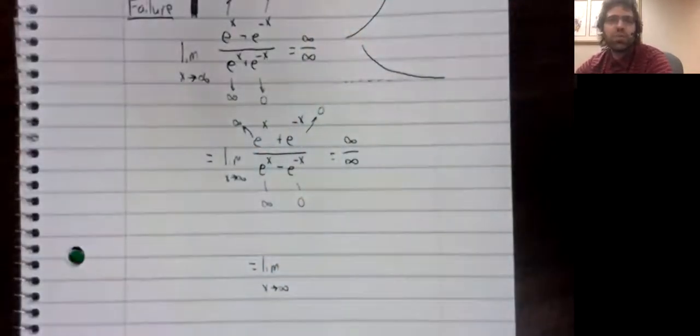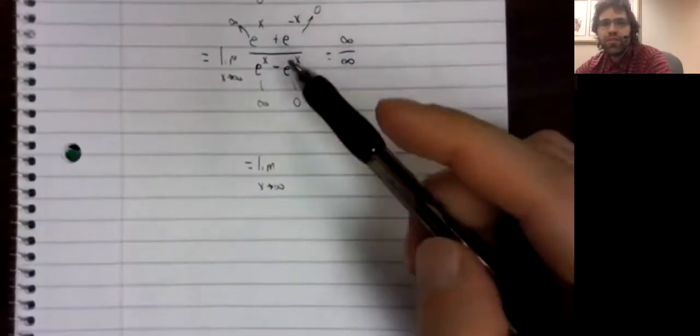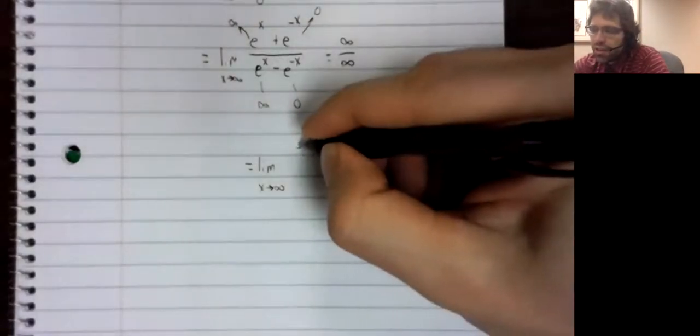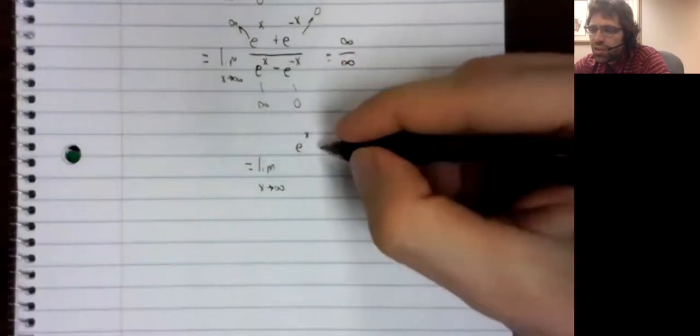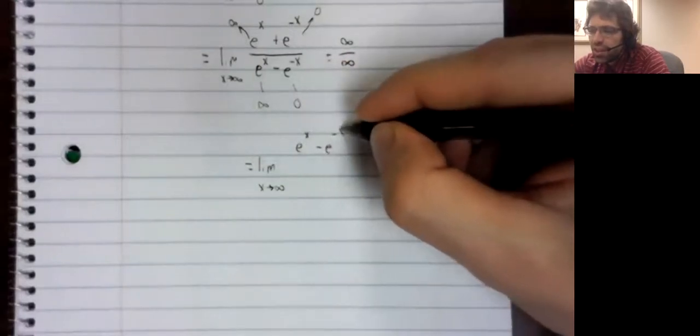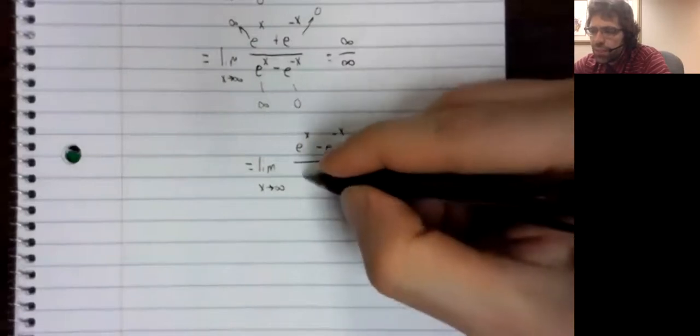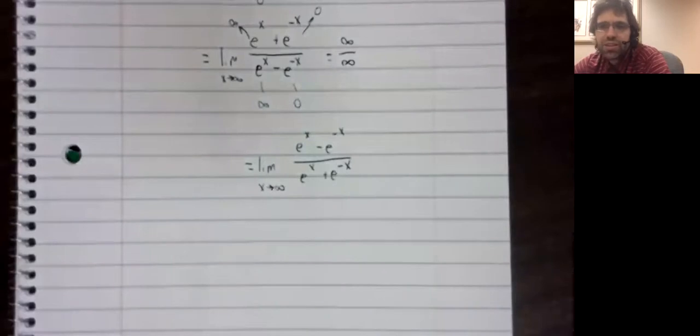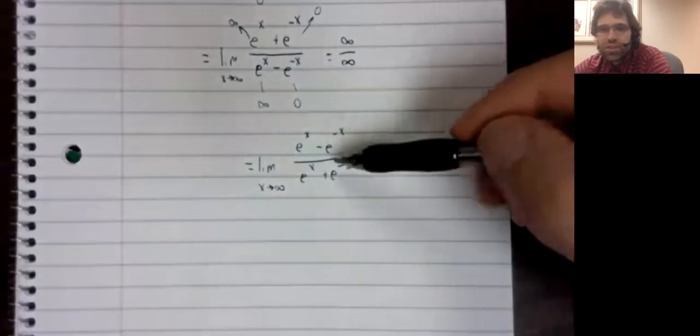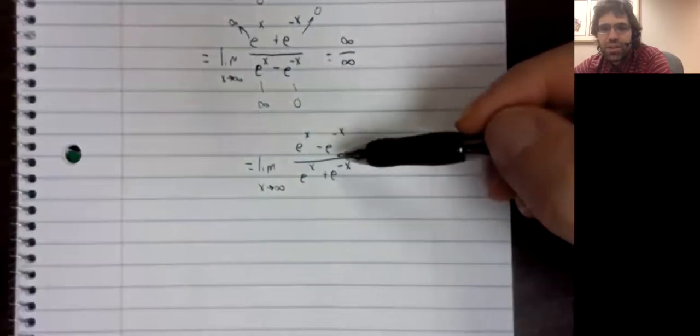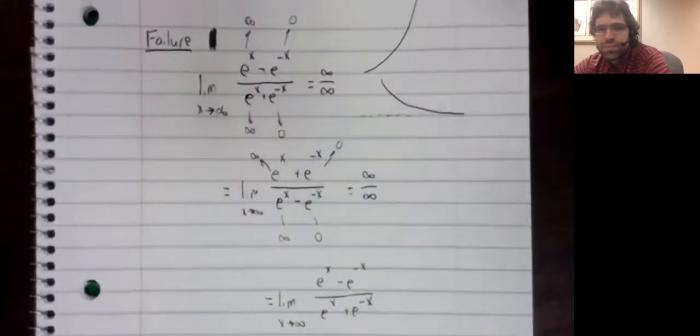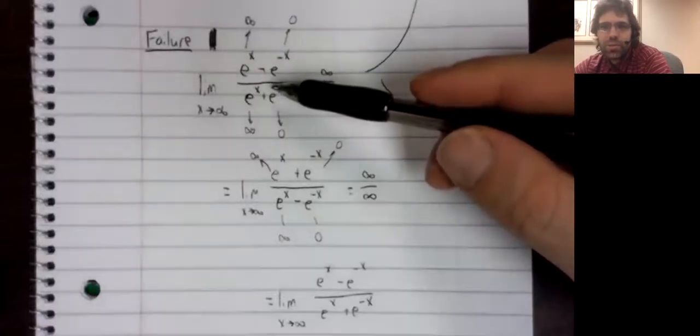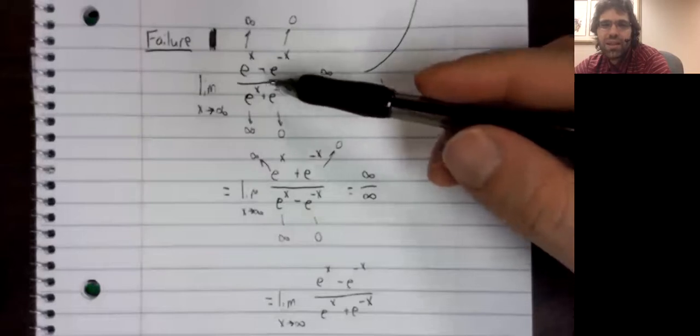Let's use L'Hôpital's rule to find this limit. The derivative of e to the x is e to the x minus e to the negative x over e to the x plus e to the negative x. This limit is this limit. This limit seems familiar. It's exactly the limit we were trying to take to begin with.